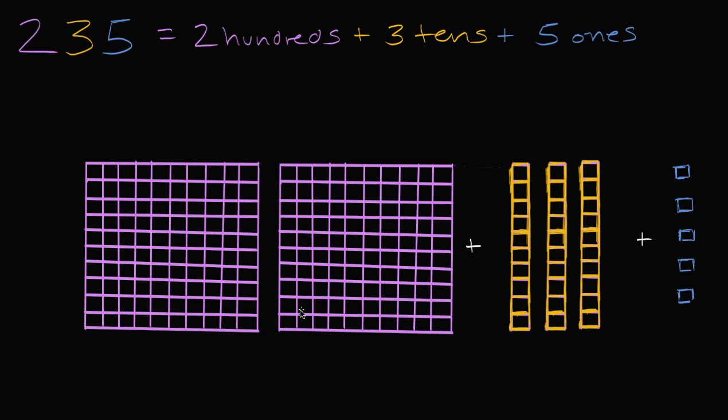So you have two groups of 100 boxes, so this is two hundreds. Then we have three tens, one, two, three. And then we have five ones.